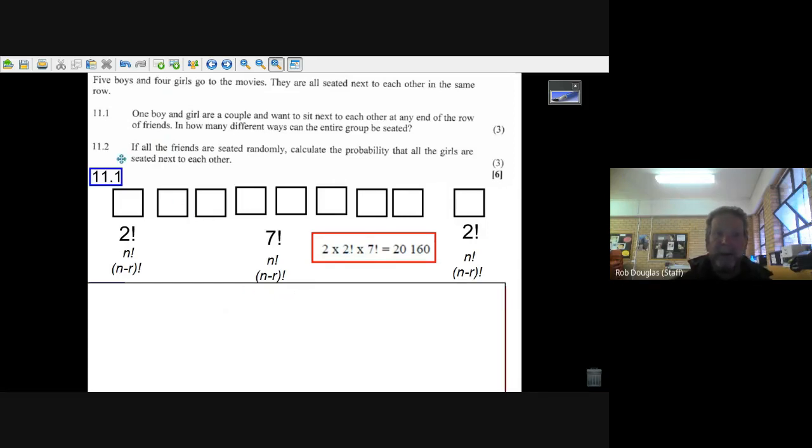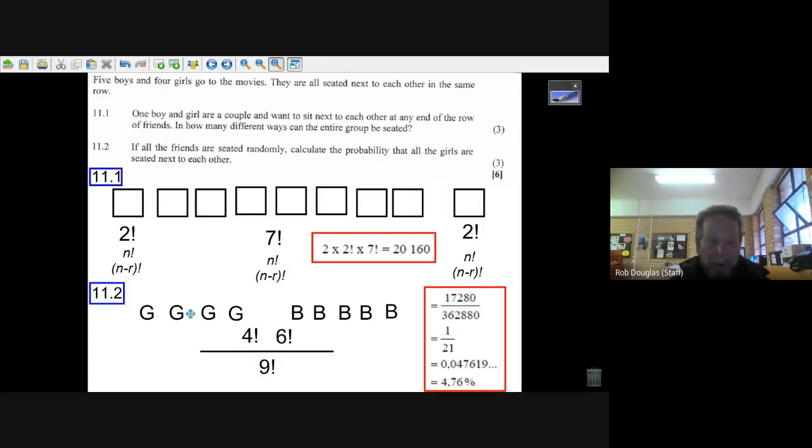Okay, let's look at the next question. If all the friends are seated randomly, calculate the probability that all the girls are sitting next to each other. What you got to imagine here: there's four girls and five boys, so what you have to do is imagine the four girls being together as a group. Well, the number of ways you can arrange those four girls is 4 factorial.